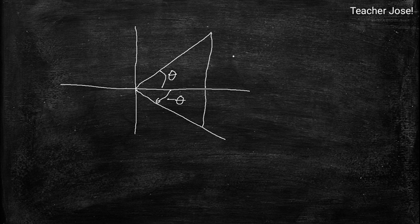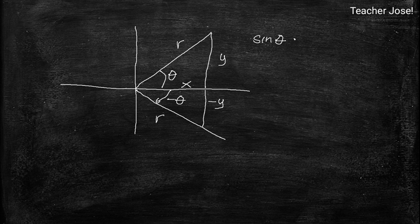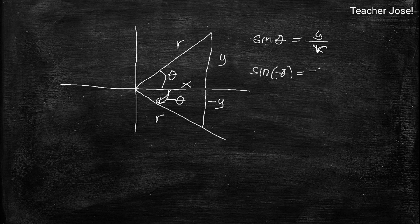Take note of this: we have y, this is x, and this is r. Also, this one is negative y, and this is r. So we have r, y, and x, and negative y on r. Take note that sine theta is equal to y over r, because that is opposite over the radius or hypotenuse. So sine negative theta is equal to negative y over r.